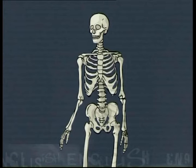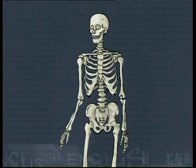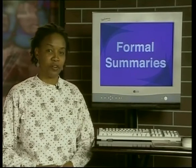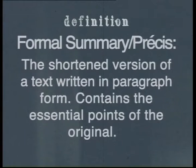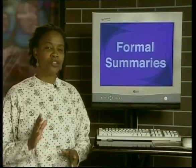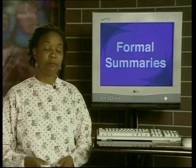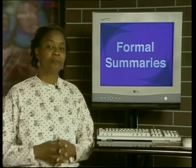Formal summaries often appear on examination papers, but they are also used in our everyday lives. A formal summary requires us to get rid of detail without altering the basic sense of the article — in other words, to take off the flesh of the article and be left with the bones. A formal summary, which you may sometimes hear referred to as a praesie, is the shortened version of a text written in paragraph form. It contains the essential points of the original. Remember, although you are shortening your original passage, your praesie must read clearly as a continuous, grammatically correct paragraph.